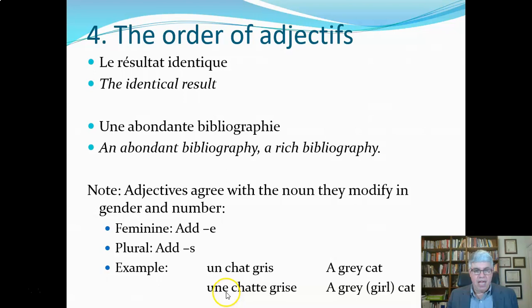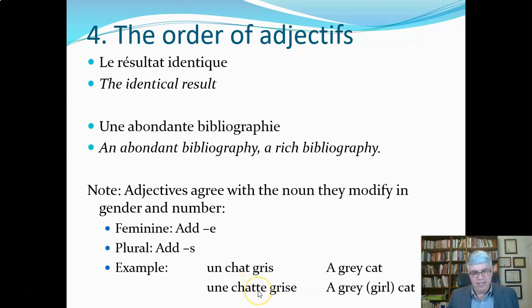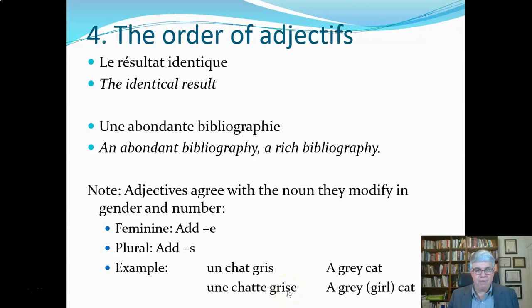For example, 'un chat gris' — 'chat' is cat, 'gris' is gray — would be a gray cat. If you had a female cat, it would be 'une chatte grise,' which we'd translate as a gray cat or a gray female cat depending on context. Notice how 'gris' changes pronunciation when you add an E: the S is silent in 'gris,' but in 'grise' the S is pronounced as a Z, because when S is between two vowels it's pronounced like a Z. Also, the T in 'chat' is silent, but in 'chatte' you pronounce the T.